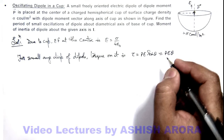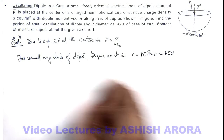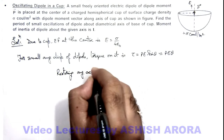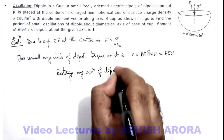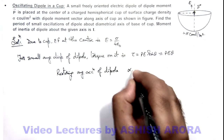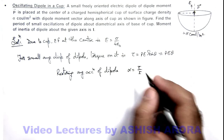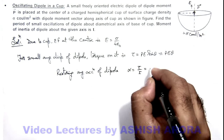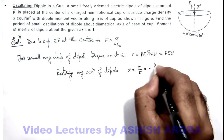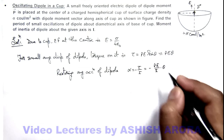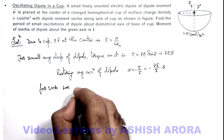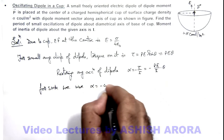If this is the torque on the dipole, then the restoring angular acceleration of the dipole can be given as follows. Since the torque will be a restoring torque because it is initially in stable equilibrium, we can write alpha as torque upon its moment of inertia. This angular acceleration is negative, so it will be minus p E by I multiplied by theta. For simple harmonic motion, we use the relation: angular acceleration equals minus omega squared theta.